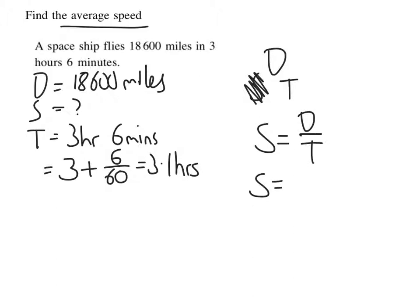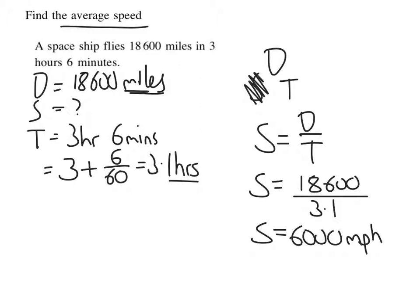Speed is going to be equal to 18,600 divided by 3.1 hours. I put that into my calculator and I get 6,000. I need to work out my units. Well, I've got miles and hours, so it must be miles per hour. And that's my answer, 6,000 miles per hour.